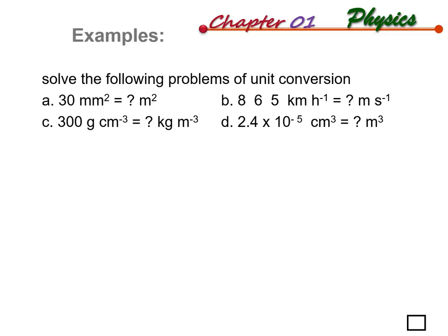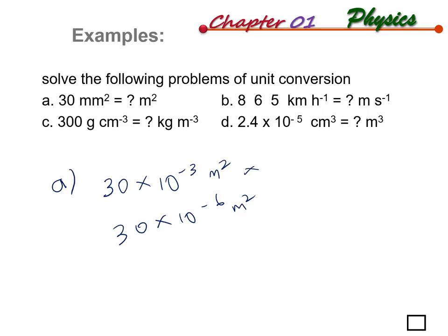We will go through the solutions one by one. The first question is converting 30 millimeter square into meter square. Usually you will end up with either 30 times 10 to the power of negative 3 meter square, or 10 to the power of negative 6 meter square. These are two common mistakes you might make.